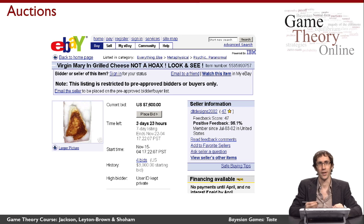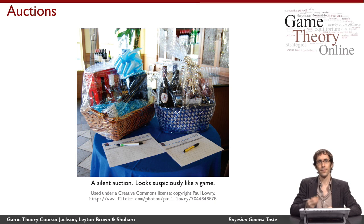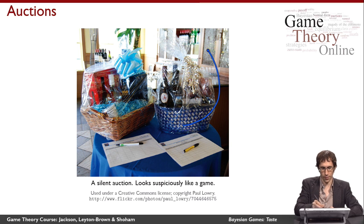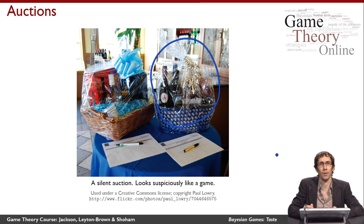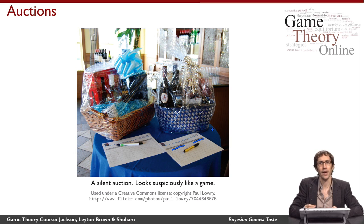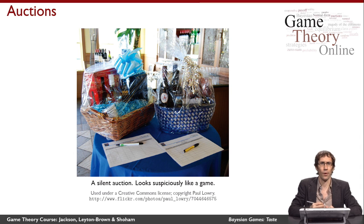It goes to show the power of auctions to match up buyers and sellers. The last auction picture I want to show you is a silent auction in a charity setting. There are two different bundles for sale — a gift basket here — and all the people interested in buying it can go up and inspect it, decide what they think it's worth to them, and then write their name and an amount they're willing to pay on a sheet of paper. We can really see how this might look like a game.